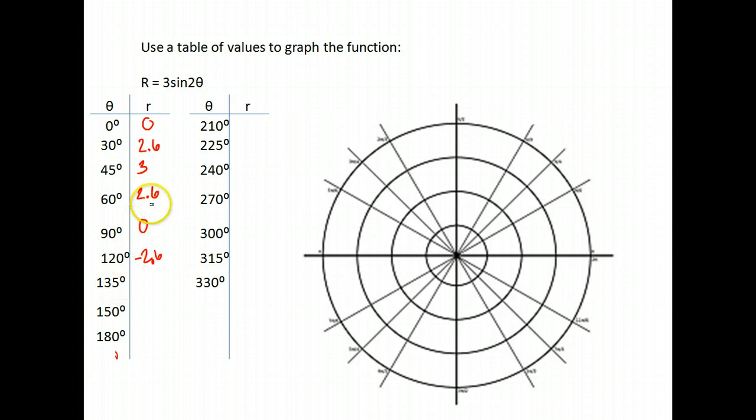135. 2 times 135 is 270. The sine of 270 is negative 1 times 3 is negative 3. 150. 2 times 150 is 300. The sine of 300 is negative 0.87 times 3 is negative 2.6.